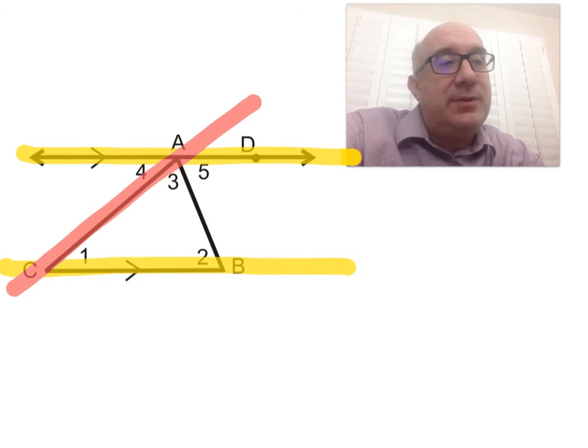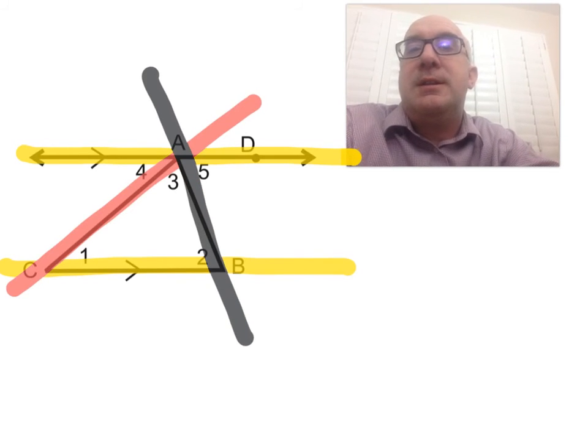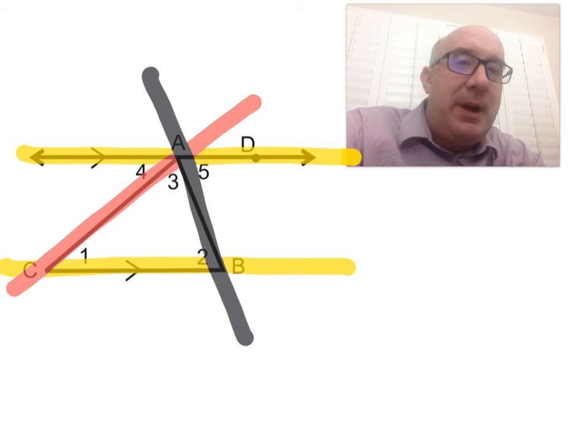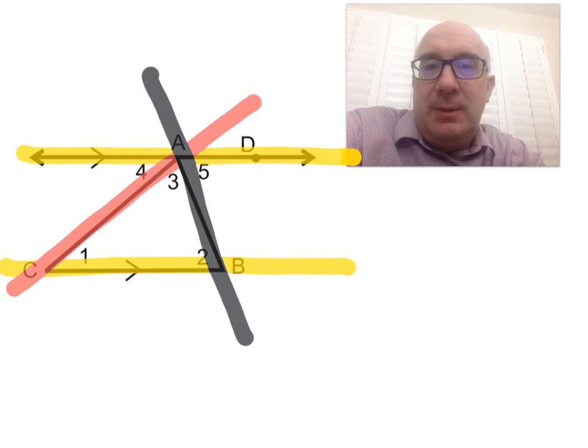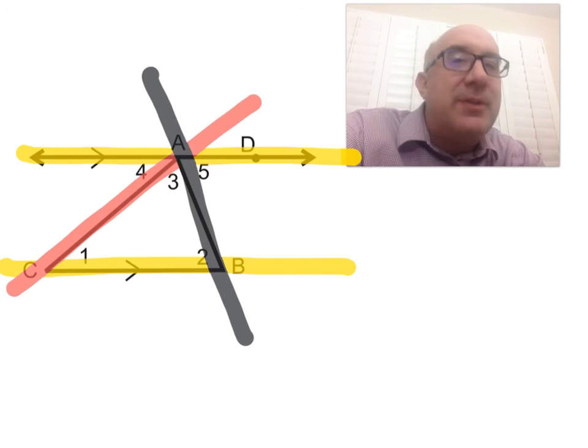There's a couple of transversals, so maybe I'll just put both of those in there, and you can see them. So the yellow lines are parallel, the red and the black line are some transversals.